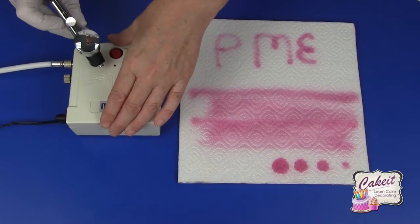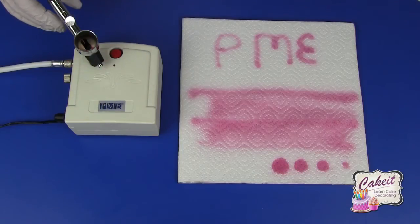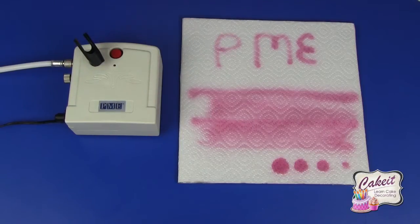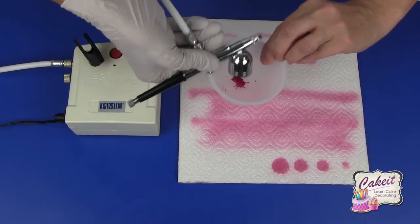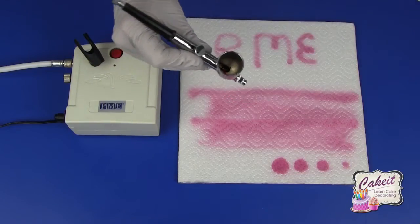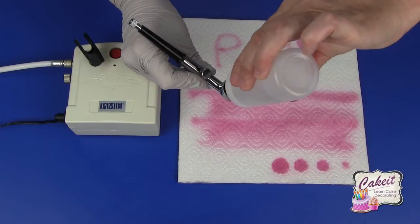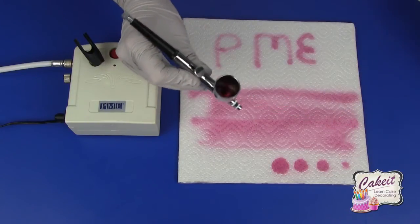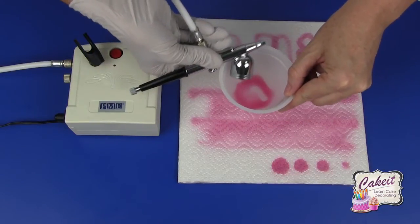Now I'm going to clean out my airbrush by removing the lid. Make sure that you remove any excess color into the pot, then use lukewarm water to add into the well. Give this a rinse round and again remove that into a small bowl.